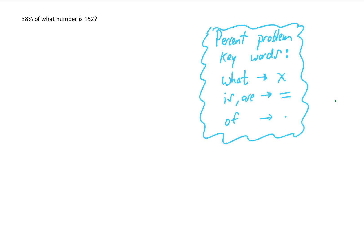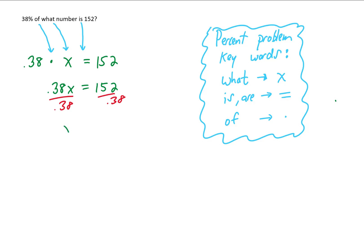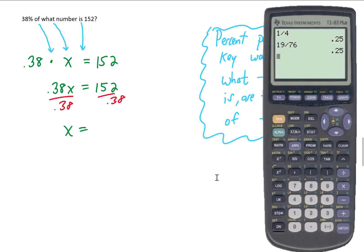Let's try: 38% of what number is 152? Using our key words: 38% written as a decimal is 0.38, 'of' is multiplication, 'what' is our variable x, 'is' is the equal sign, and we copy down 152. The equation is 0.38x equals 152. To solve, we divide both sides by 0.38, leaving x by itself. Dividing 152 by 0.38 gives us 400. Does this make sense? 38% of 400 is 152 — that sentence makes sense, so 400 is our answer.